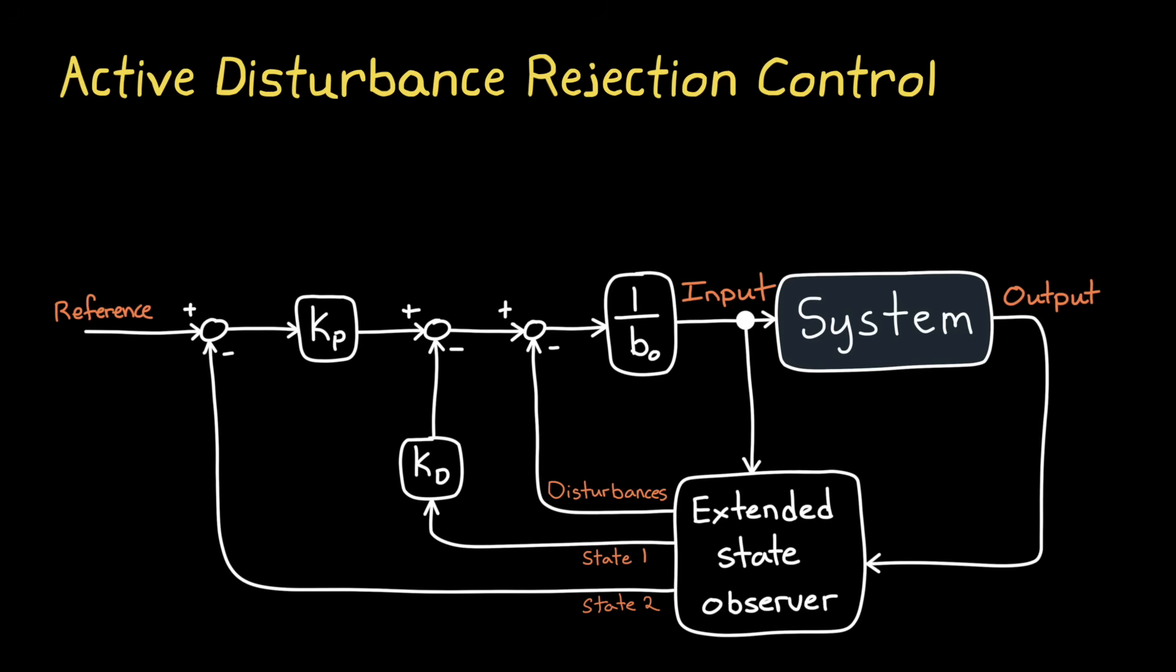So we're going to start with Active Disturbance Rejection Control, or ADRC. An ADRC uses an extended state observer to estimate both the system states and the total disturbance. And this is especially beneficial for systems that behave close to a pure first- or second-order system but then have some additional unknown dynamics or unknown disturbances that impact it. For example, a motor spinning a mass, like in a reaction wheel, behaves ideally like a double integrator.